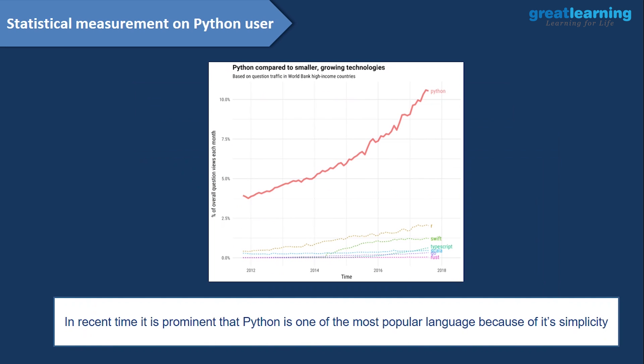Let's look at the statistical measurement of Python users. You can see in the graph that after 2016, there is a straight increase. The graph shows up to 2018, and Python users are continuously increasing. This actually proves that Python is becoming more popular day by day because of all its flexibilities.